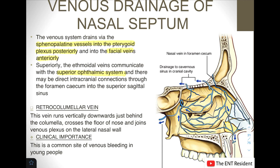The retrocolumnar vein runs vertically downwards just behind the columella. It crosses the floor of the nose to join the venous plexus on the lateral nasal wall. This vein is important because it is a very common site of venous bleeding in young people.